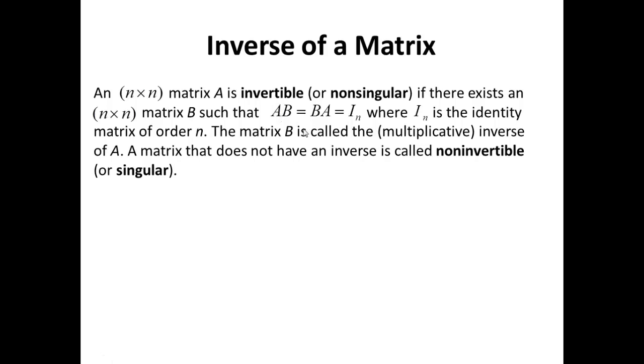If this is the case, then we say that B is the Multiplicative Inverse of A. Or in other words, B is said to be the Multiplicative Inverse of A if and only if A times B equals B times A and that equals In. You would need this definition in most of the proofs under the concept Inverse of a Matrix.